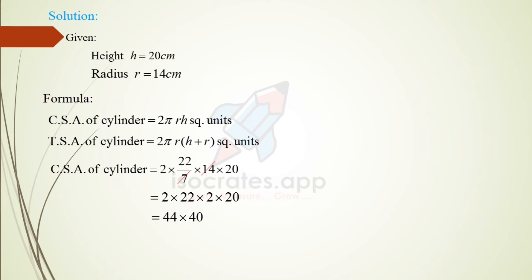Next, 2 into 22 is equal to 44, 2 into 20 is 40. The end result: 44 multiplied by 40 is 1,760 centimeter square.